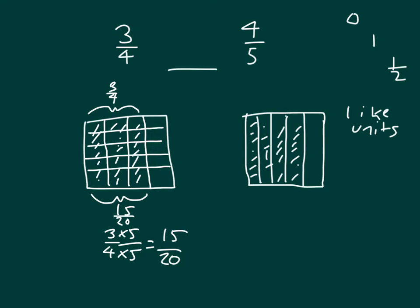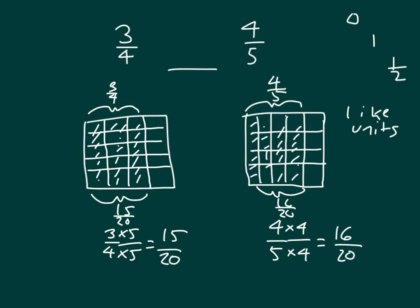If we do something similar here, but instead of drawing 4 lines to divide it into 5 parts, we'll draw 3 lines to divide it into 4 parts. We have originally 4 fifths, and we multiply it by 4 to get 16 twentieths. 4, 8, 12, 16 twentieths. So now we have like units, and we're comparing 15 twentieths with 16 twentieths, so 3 fourths is less than 4 fifths.